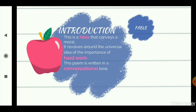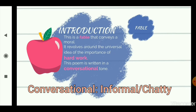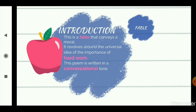This poem is written in a conversational tone. A conversation is an exchange between two or more people — a talk between two or more people. So there are two main characters, like the title suggests: the ant and the cricket, and they both are in a conversation.